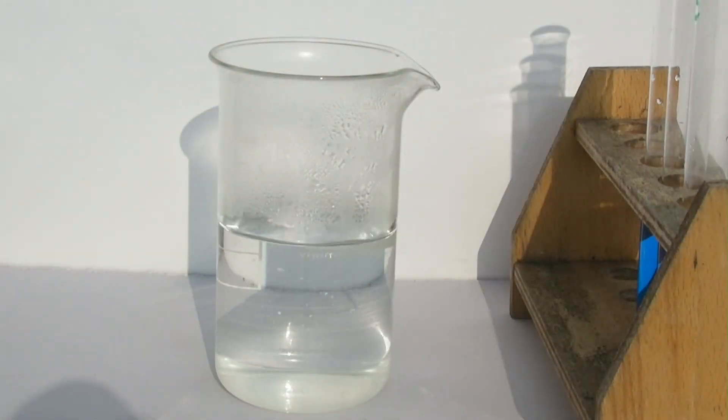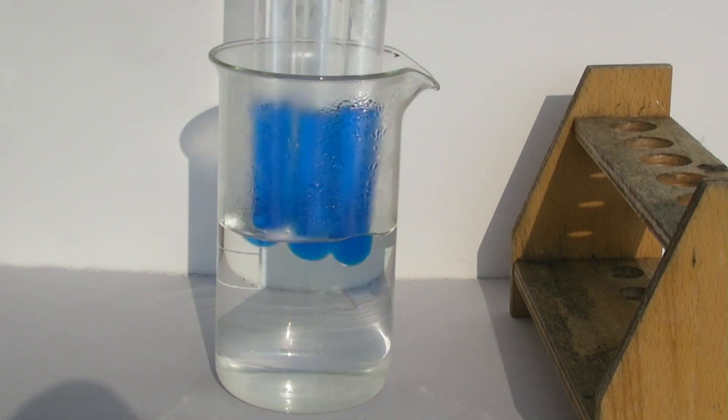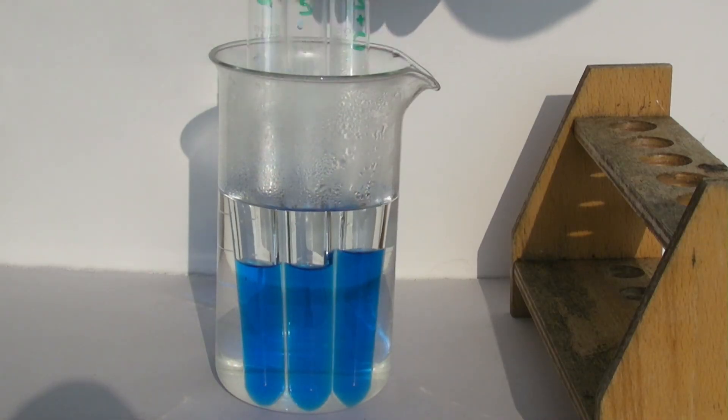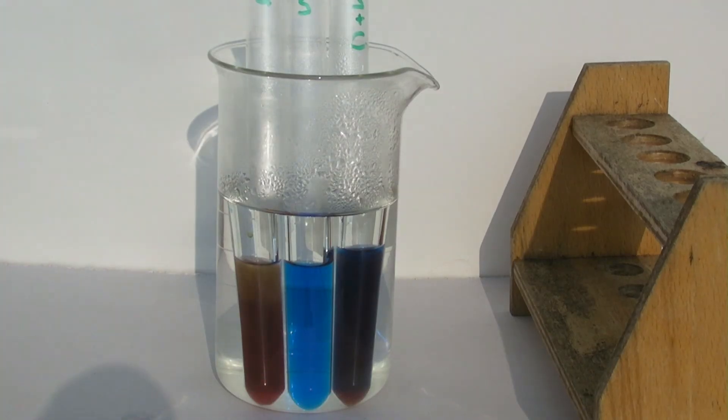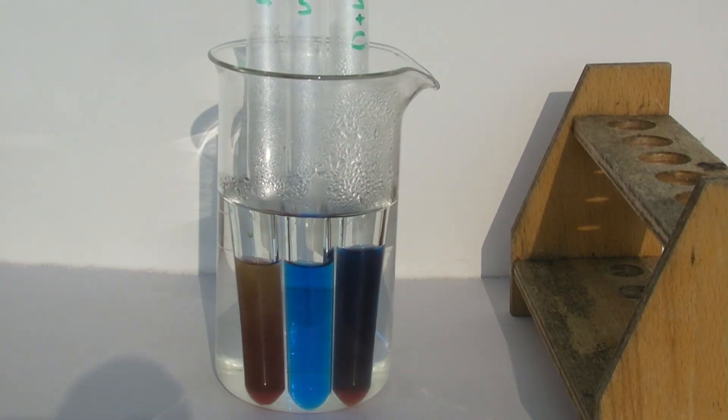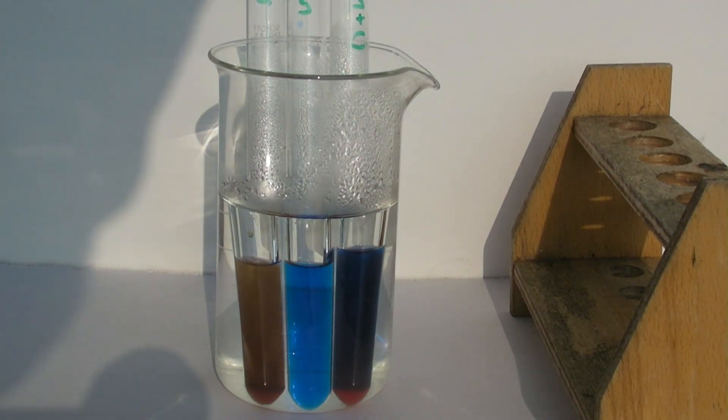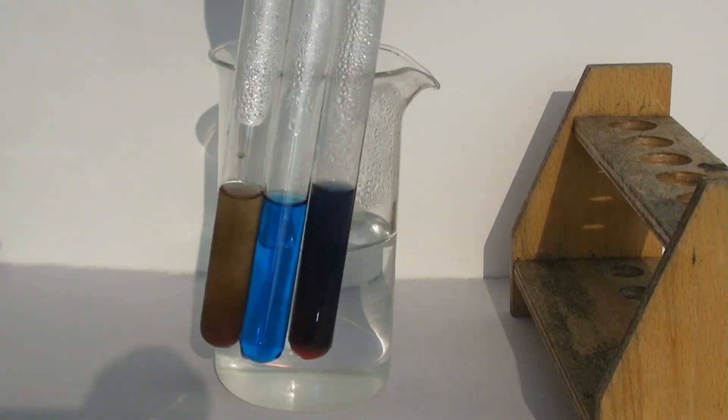Now, all the samples are heated in a beaker with hot water. A positive result is indicated by a precipitate of copper oxide that can exhibit different colors. At the end, all samples can be removed from the water bath.